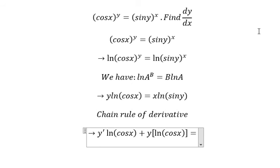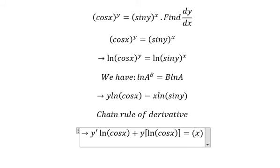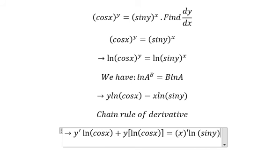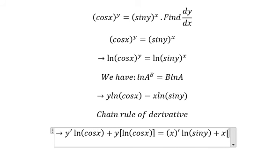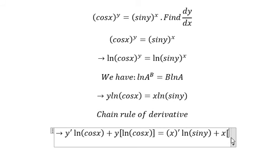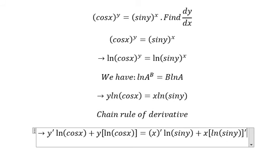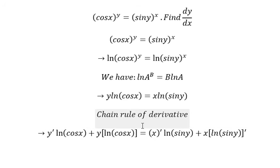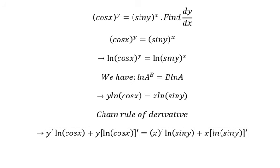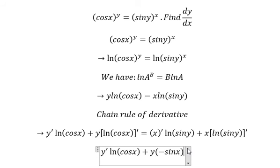Next we do first derivative of x. Like that, we do first derivative of this one. So this one we have the same, nothing changed. This one we got about y negative sinx over cosx.